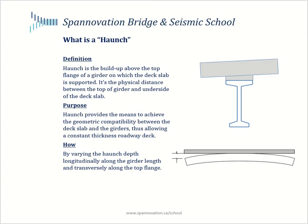This tutorial provides a basic description of what is known as a haunch on highway girder bridges. Let's begin with the definition of a haunch, which is a build-up above the top flange of a girder on which the deck slab is supported. In most cases this build-up happens to be in concrete.